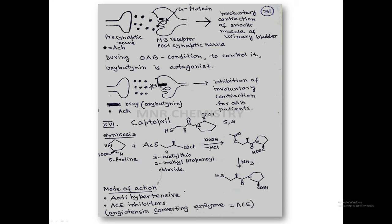When the two S-configured molecules combine, the amide linkage forms. This molecule is one step away from captopril — only the acetyl protecting group needs to be removed. Treatment with ammonia converts SCOCH3 to SH, giving the structure of captopril. The mode of action: captopril is antihypertensive. It is an enzyme inhibitor — specifically an angiotensin-converting enzyme (ACE) inhibitor. Angiotensinogen in the liver is converted to angiotensin-1 by renin (secreted from the kidney). Angiotensin-1 (a decapeptide, 10 amino acids) is converted to angiotensin-2 (an octapeptide) by ACE.